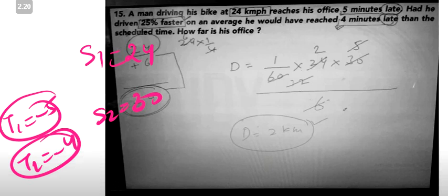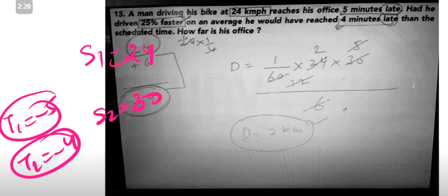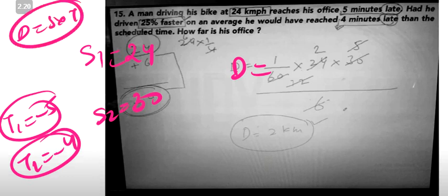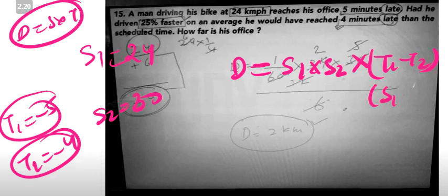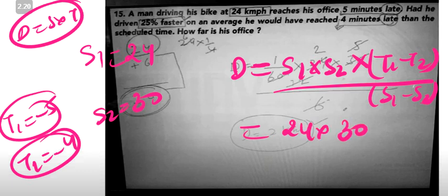Time 1 is 5 minutes late and time 2 is minus 4 minutes early. The difference in time: minus 5 minus minus 4 equals 1 minute. We know distance equals speed multiplied by time. Using the formula: product of speeds multiplied by difference in time, divided by difference in speeds. Product of speeds is 24 into 30.